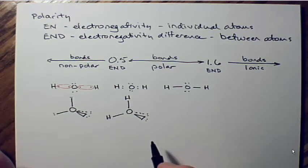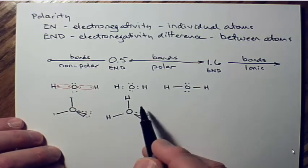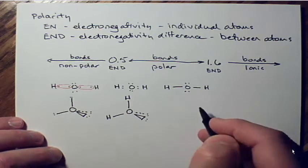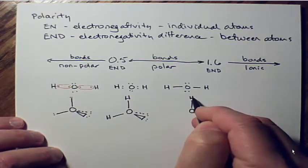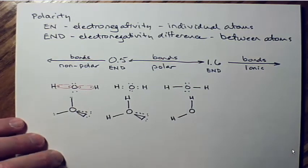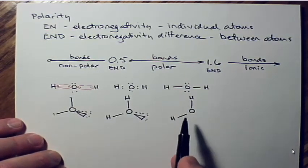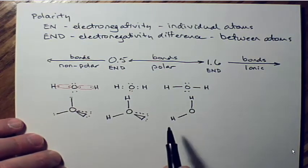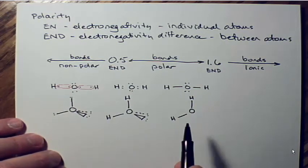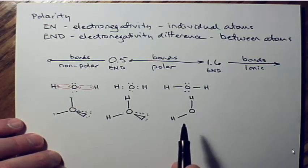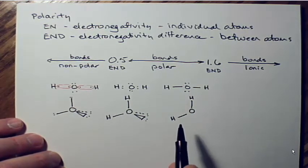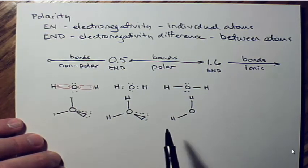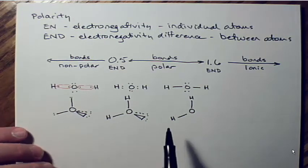The last step in figuring out the three-dimensional shape is to draw exactly the same thing again without the lone pairs. This last drawing is no longer tetrahedral because we're missing those two arms. The name of this three-dimensional shape is bent — it's a bent molecular shape. You've got to be able to do this to figure out if the molecule is polar. Before we even get to polarity, we've got to get here first.